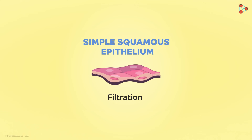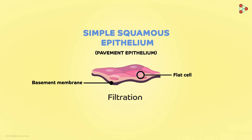In this type we find flat cells lying upon the basement membrane. These being extremely flat or tile-like are also known as pavement epithelium. Their flat nature itself states their function and locations — this type is mainly used to transport or precisely diffuse substances across membranes, and also to perform filtration.